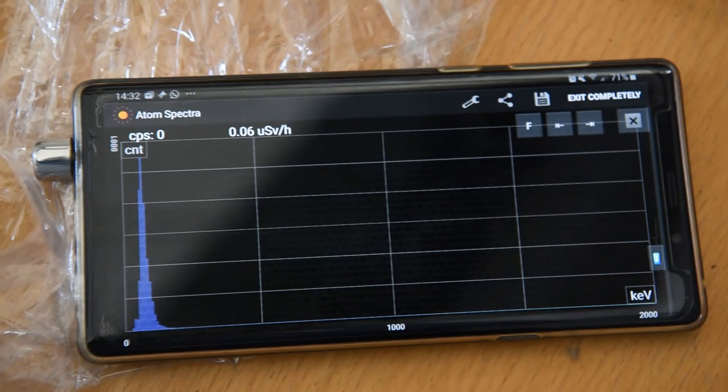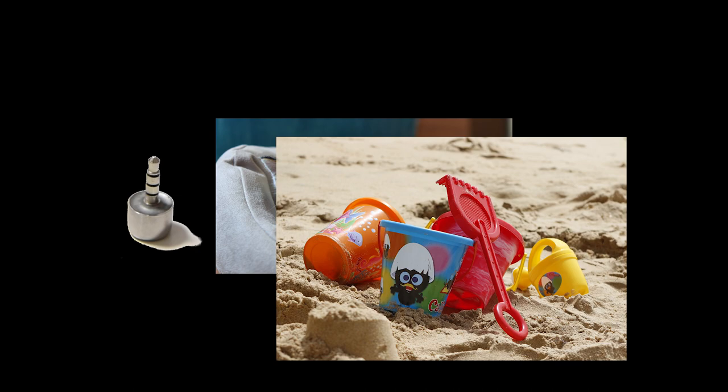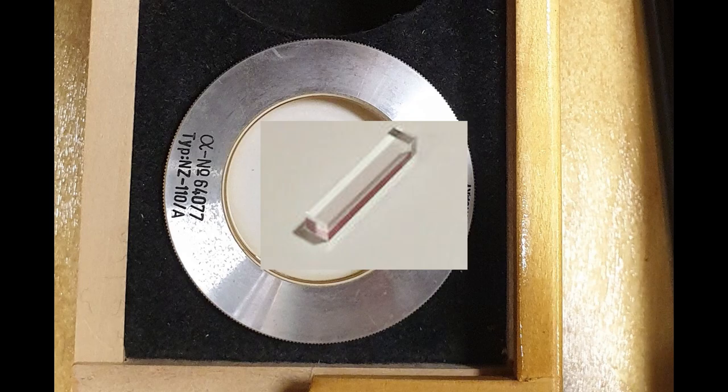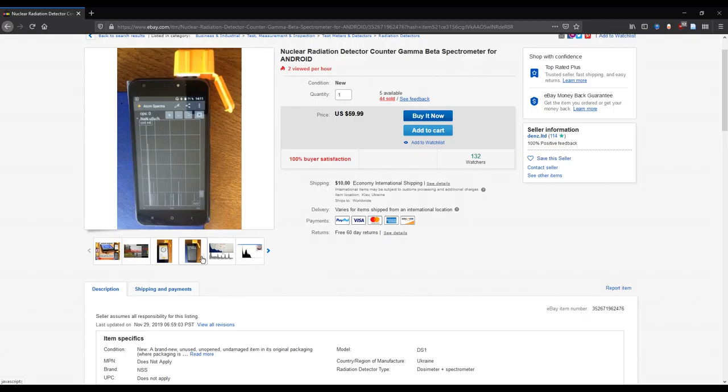The amount of energy deposited mostly depends on the size and density of the crystal. Both are low because we can see the detector is small and the detector is made of plastic, which has a very low density. The better scintillators are made of crystals like sodium iodide or cesium iodide or maybe something even denser.